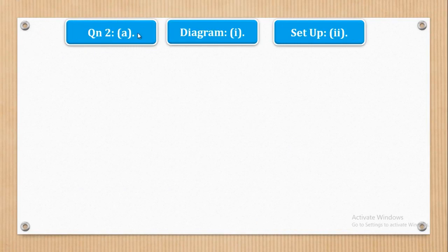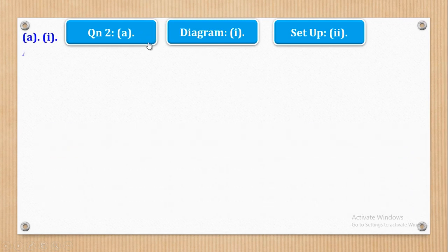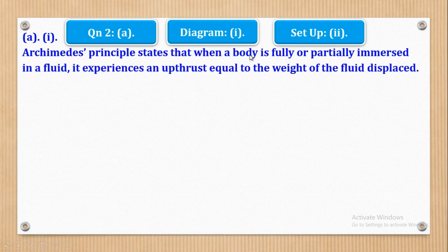We shall start with question 2a. Question 2a says Roman 1: state Archimedes' principle — that is 1 mark — and Roman 2: describe an experiment to verify Archimedes' principle. For Roman 1, Archimedes' principle states that when a body is fully or partially immersed in a fluid, it experiences an upthrust equal to the weight of the fluid displaced.